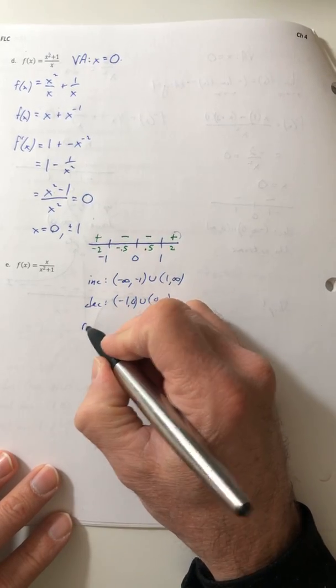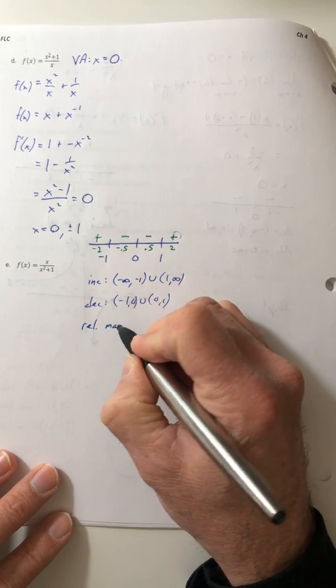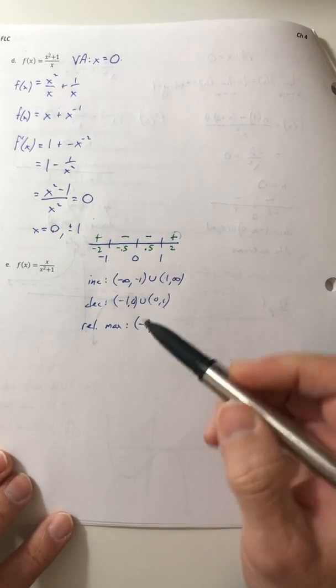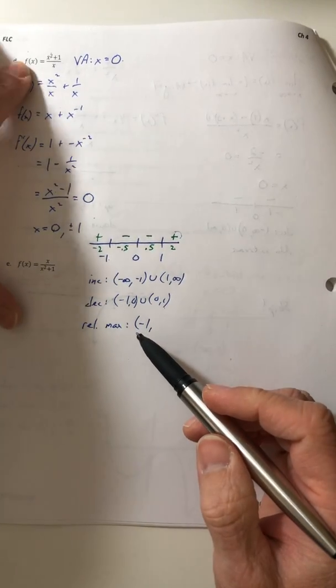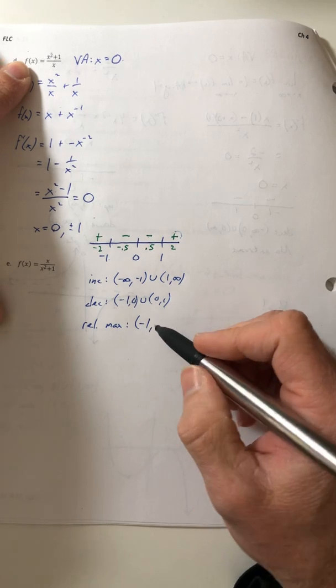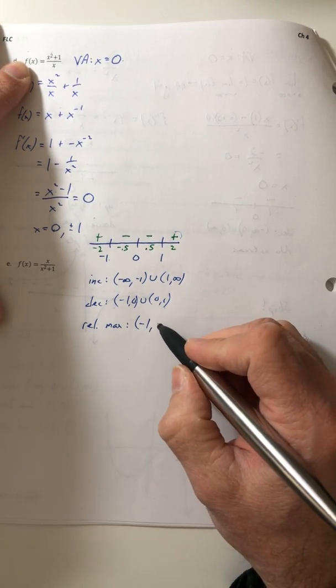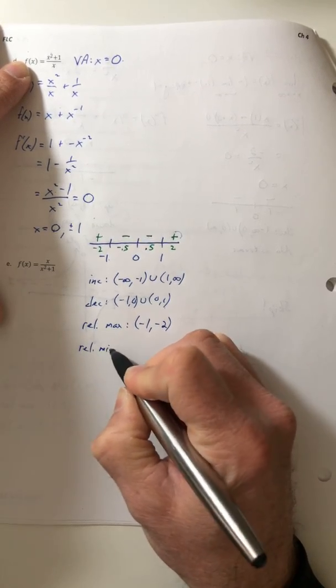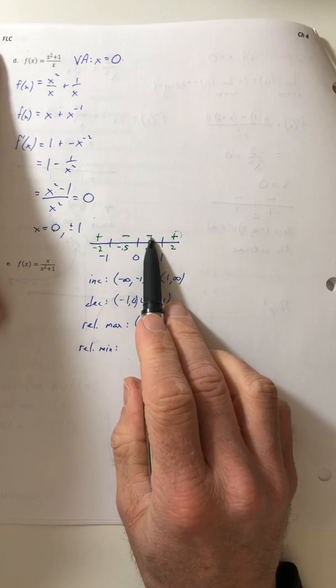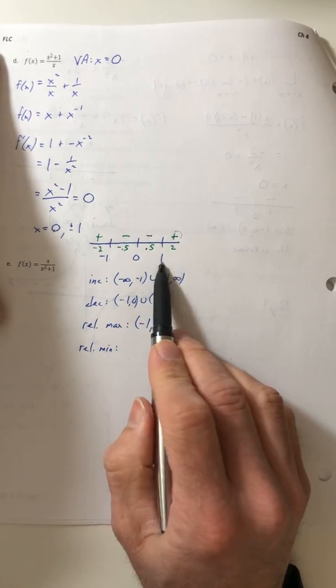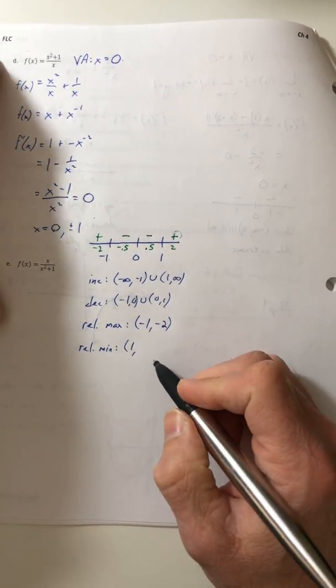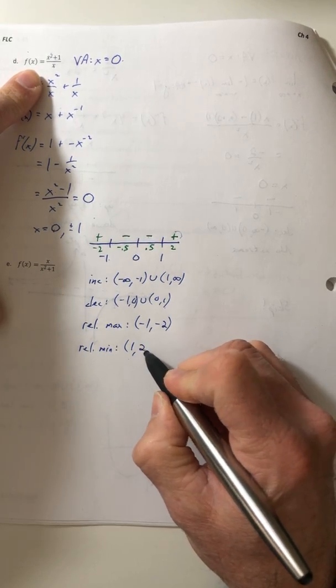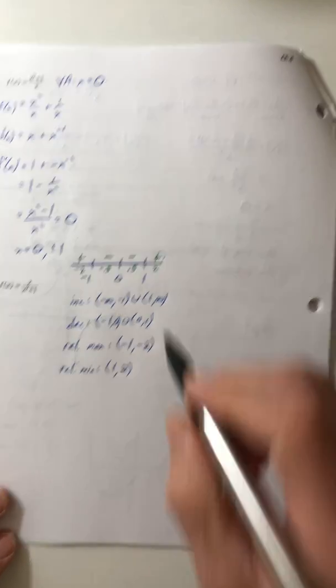So now I know I have a relative max when x is negative one. So I'm going to go all the way back up to my function and stick it in there. So when x is negative one, it comes out as a negative two. And I have a relative min because the derivative switched from minus to plus right at one. So when x is one, plug it into the function and the y value comes out as a positive two.